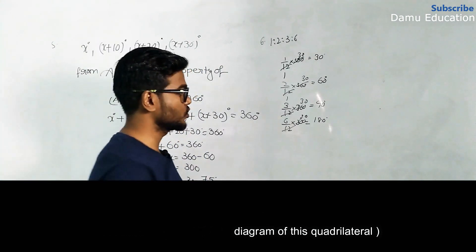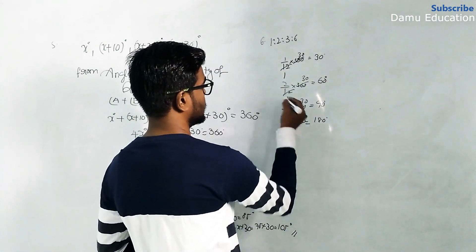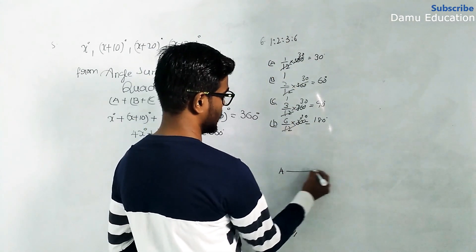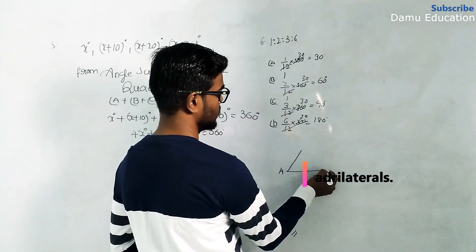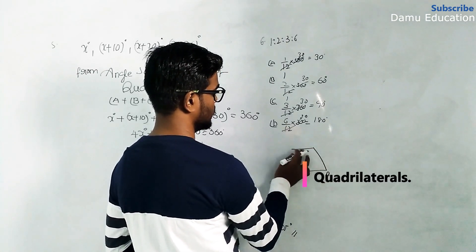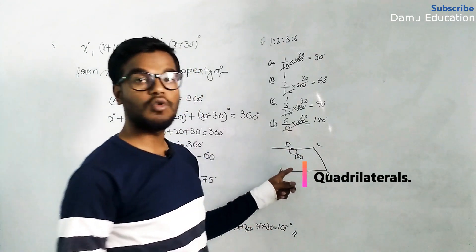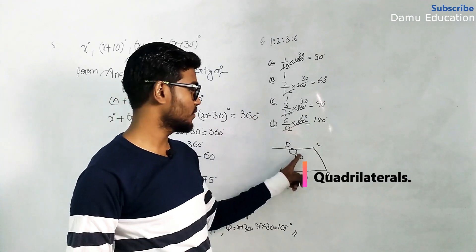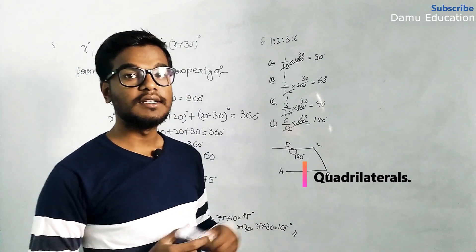Now let's do the quadrilateral construction. Angle A is 30 degrees, angle B is 60 degrees, angle C is 90 degrees, but angle D is 180 degrees. At angle D, the line makes a straight angle — 180 degrees — so side D and side A will not meet to close the figure. The shape won't form a closed quadrilateral.